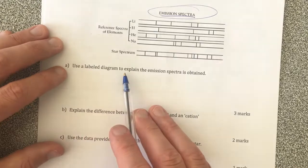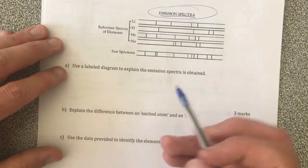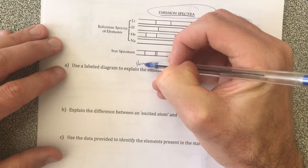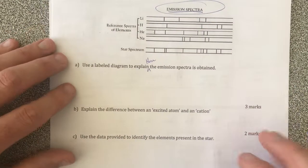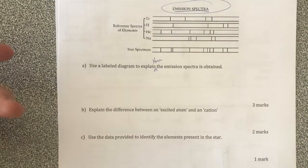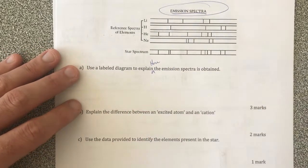Use a labeled diagram to explain the emission spectra is obtained. This is talking about how do we actually end up with wavelengths of light coming out.